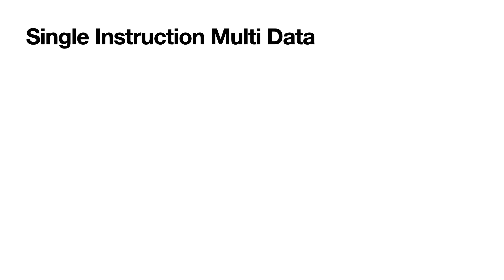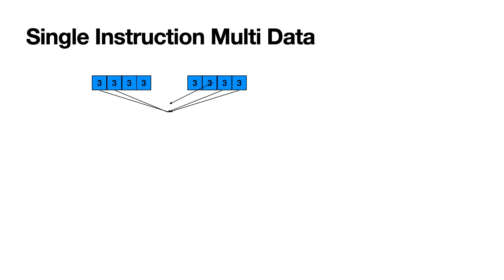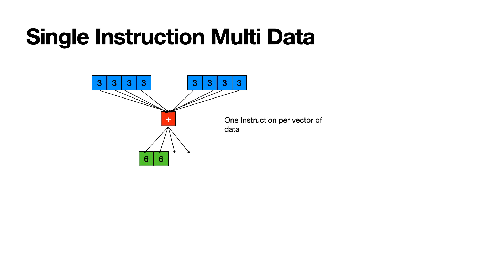Single Instruction Multiple Data takes the same principle but applies it to multiple data. Let's take a look at this example. We're going to load two vectors. Vectors are sort of like groups of data — think of a vector as four integers of some size, like 32 bits. Now you see we're creating a new vector: six, six, six, six. That's the result. The idea is you're taking two groups of numbers, in this case integers, and applying the same operation to all of them. That's one instruction per vector of data.